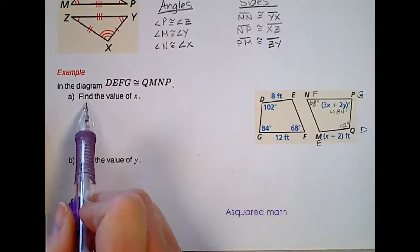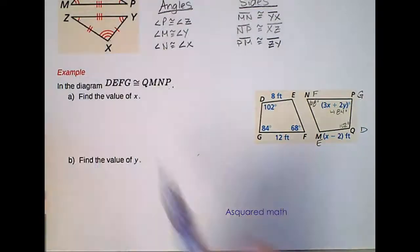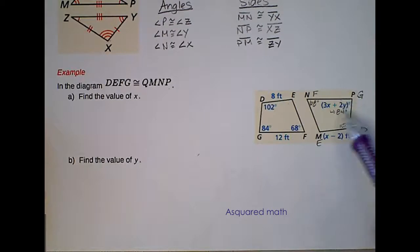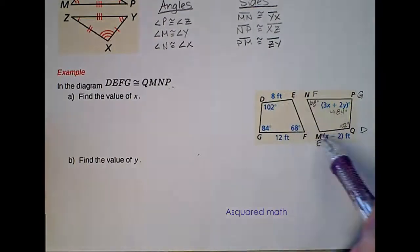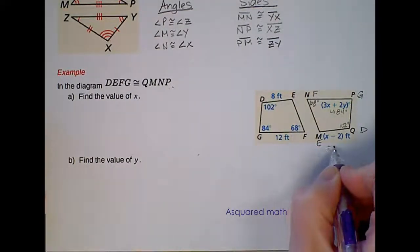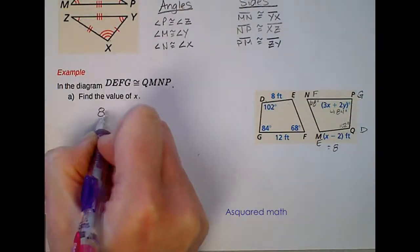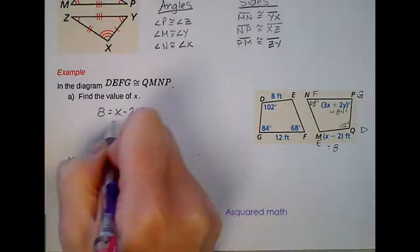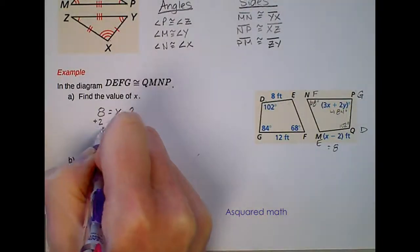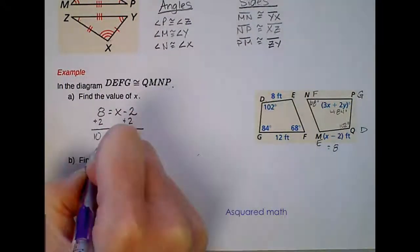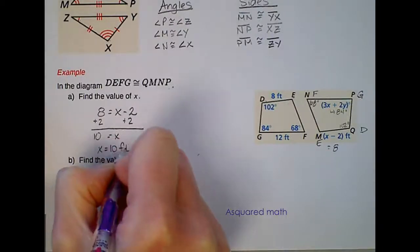Part A is asking us to find the value of X. In the picture I have two equations. This one involves both X and Y and this one just involves X. This is MQ and on our pre-image it's ED. So if I look at ED, ED is 8 feet and MQ is X minus 2. So if this is 8, then 8 needs to equal X minus 2. Solve for X, add 2 to both sides and we get X equals 10 or X equals 10 feet because the unit is feet.